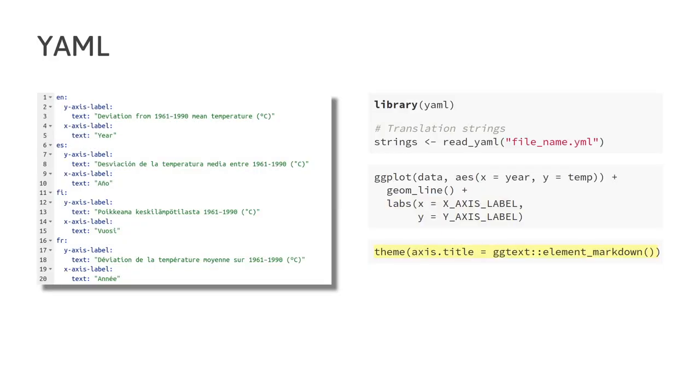This is where I use the ggtext package. This is a line from the theme function which I showed earlier where we replaced the element_text function with element_markdown. What this enables is that the translators can use simple markdown in their strings which is then converted to display the correct output in the final image. So, for example, they could enclose a unit in asterisks and this is then converted into italics in the final output.